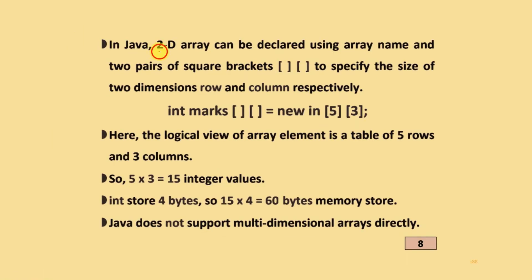In Java, 2D array can be declared by using array name and two pair of square brackets. Two pair of square brackets specify the size of two dimensions: rows and columns respectively. Example: int marks[][] = new int[5][3]. The logical value is a table of five rows and three columns. Five by three means fifteen integer values, and integer stores four bytes, so fifteen by four equals sixty bytes stored in memory.